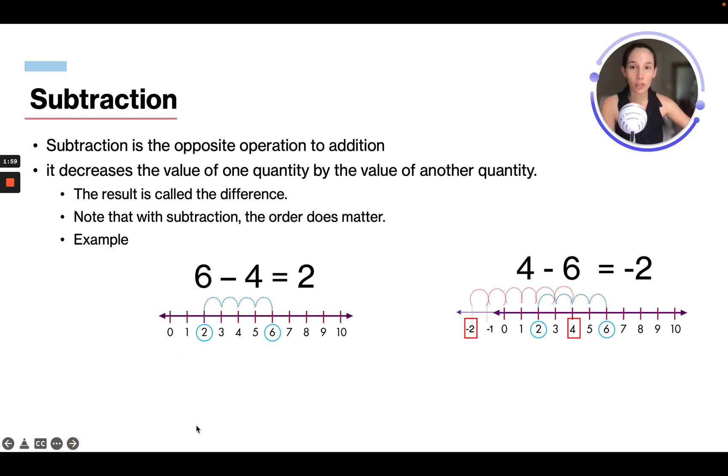Then we have subtraction, which is the opposite operation to addition. It decreases the value of one quantity by the value of another quantity. So this result is called the difference. If you've ever seen a problem they say find the sum, that means addition, or if they say find the difference, that means subtraction. You want to take note that with subtraction, the order does matter. So for example, if it's 6 minus 4, we start at 6 and we go back 1, 2, 3, 4, we're gonna get 2.